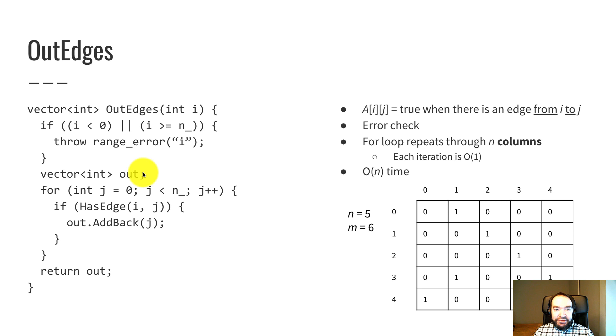Then I create a vector of ints called out. It's the list or vector of out edges. And I loop through every column j that's in range. If there is an edge from i to j, then I add j to the back of this out vector. And then I return out at the end. Pretty simple.